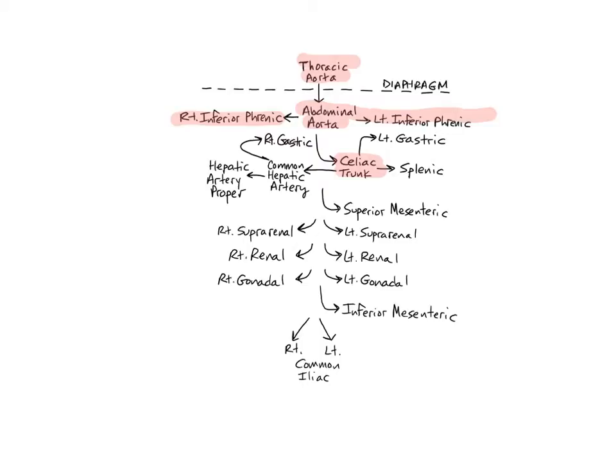The left gastric artery is the smallest of the three branches, and branches superiorly toward the left to run along the lesser curvature of the stomach, where it then anastomoses with the right gastric artery. It supplies the esophagus, the lesser curvature of the omentum, which is a fold of peritoneum that connects the stomach with other abdominal organs.